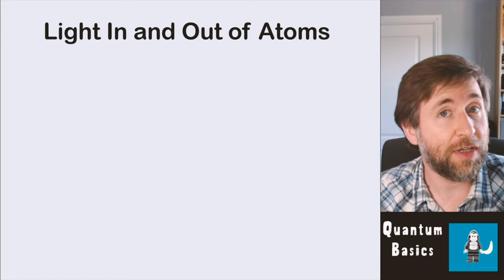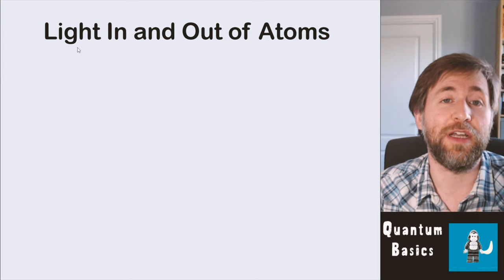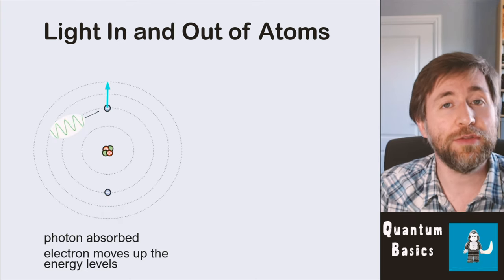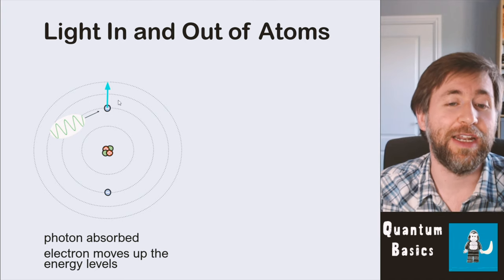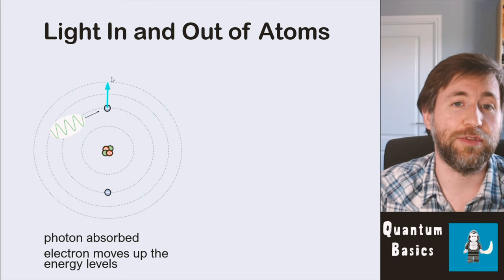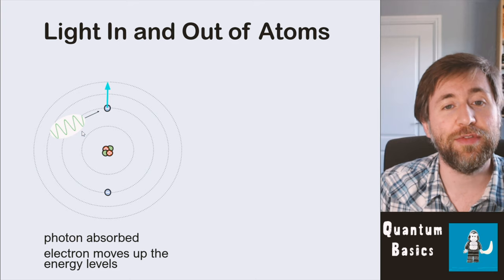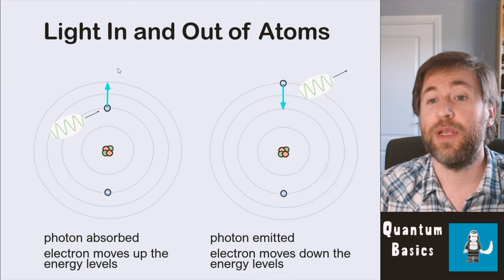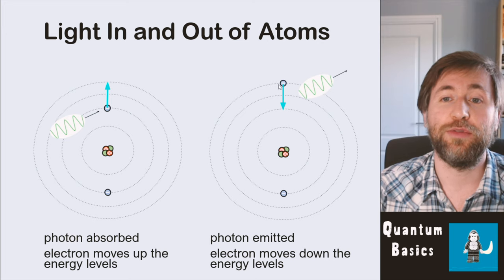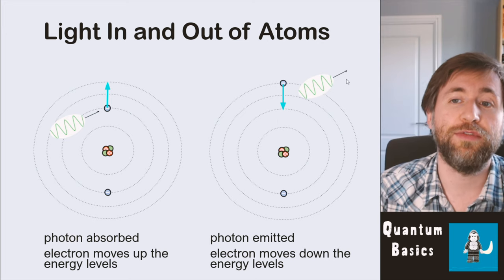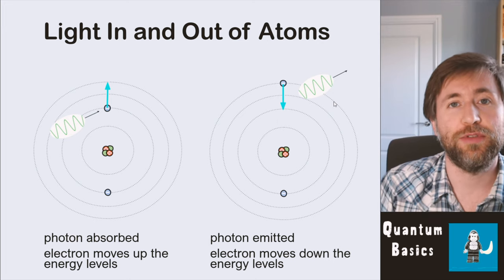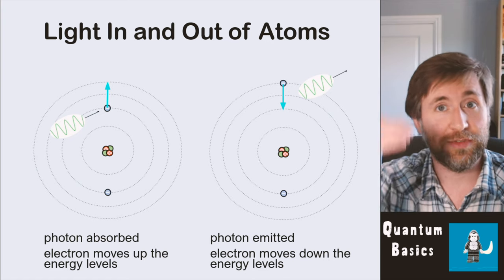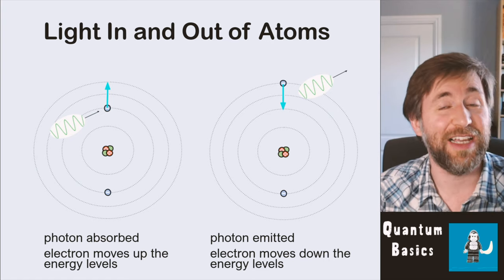Let's focus on understanding a key idea: how light comes in and out of atoms. When a photon is absorbed, an electron moves up the energy levels — it takes the energy from the photon and has more energy. When light is emitted, the electron moves down the energy levels. A photon being emitted corresponds to an energy level change where the electron moves down — it gives out energy and has less energy afterwards.